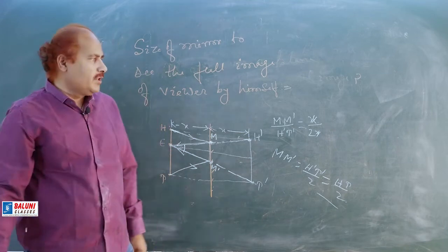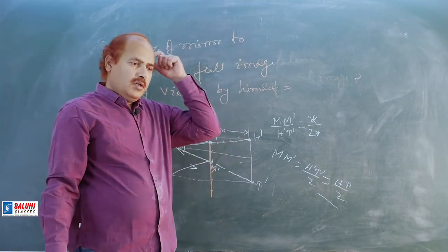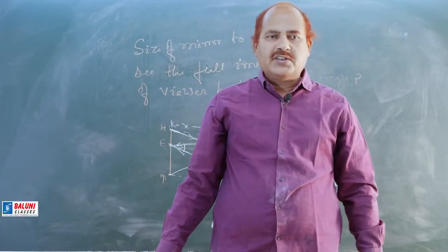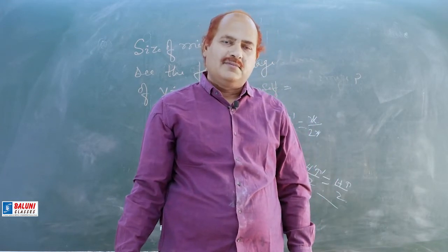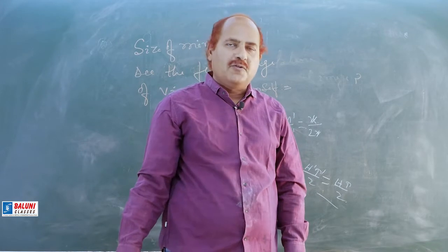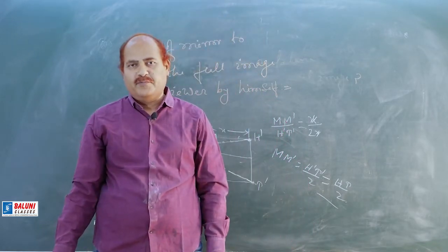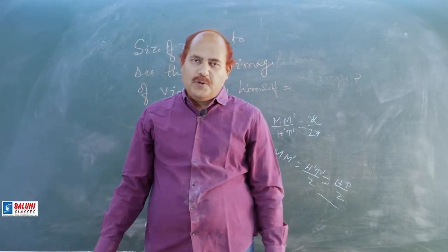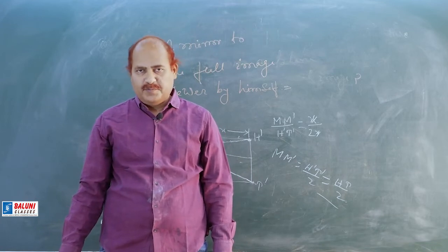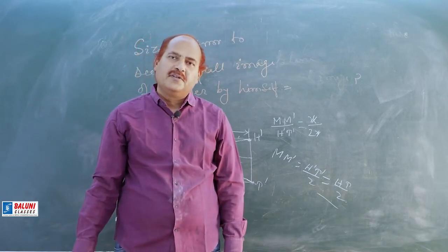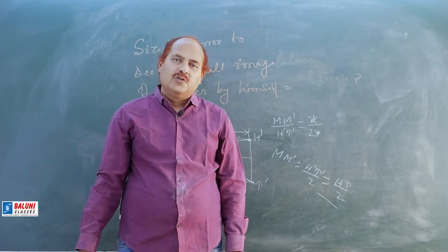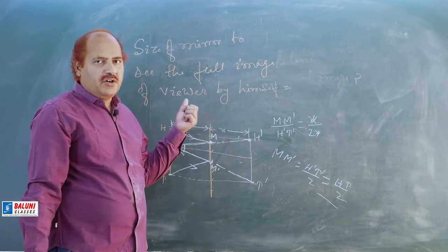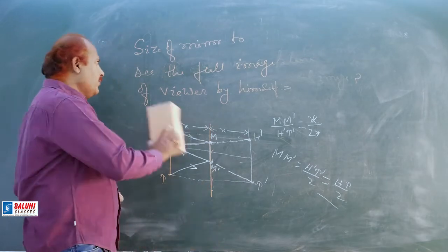So the size of the mirror must be half the size of the viewer. This type of question is frequently asked. For example: a person standing in a room wants to see the full image of the wall behind himself in a plane mirror on the opposite wall. If the viewer is in the middle of the room, you can prove that the mirror size should be one-third the size of the wall.